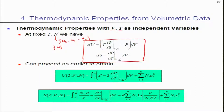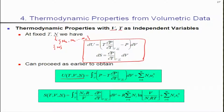Given these two relations, we can integrate from a very large volume — infinity — to V. A very large volume corresponds basically to an ideal gas or zero pressure. We can use the same approach as done for the case where p and T are independent variables. Here V and T are independent variables, and we evaluate U as a function of T, V, n as V goes to infinity. We integrate from infinity to V, and by rearranging we get corresponding terms at infinite volume.